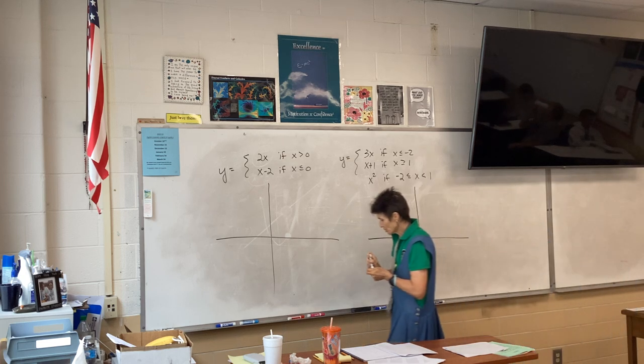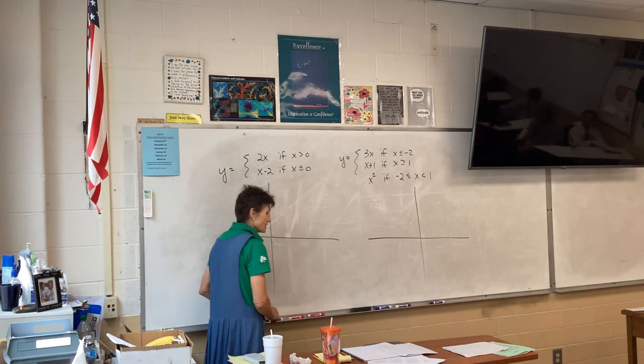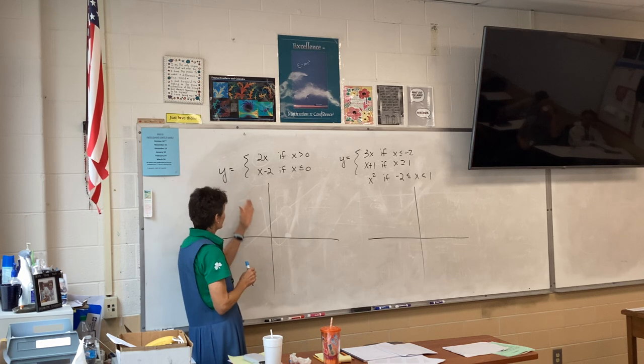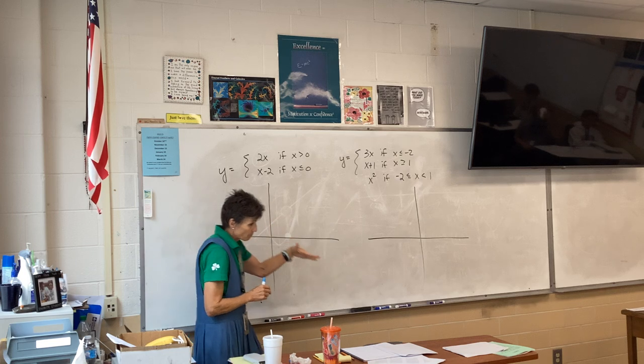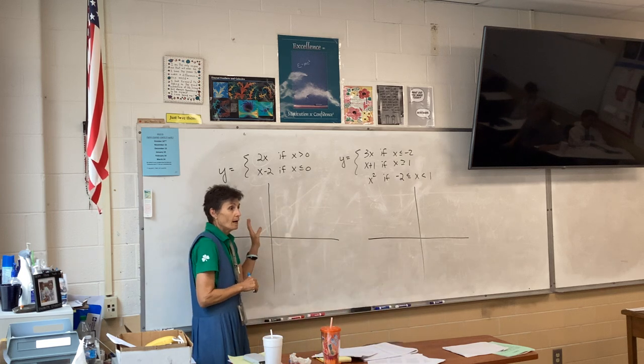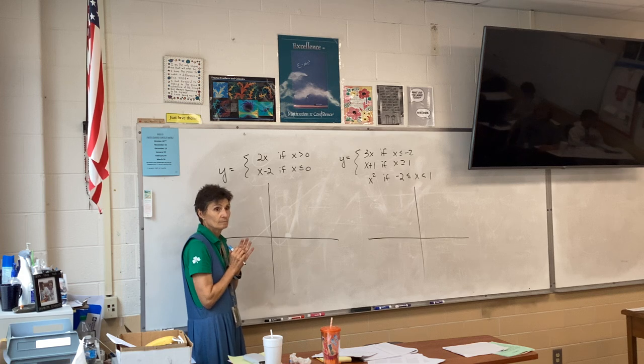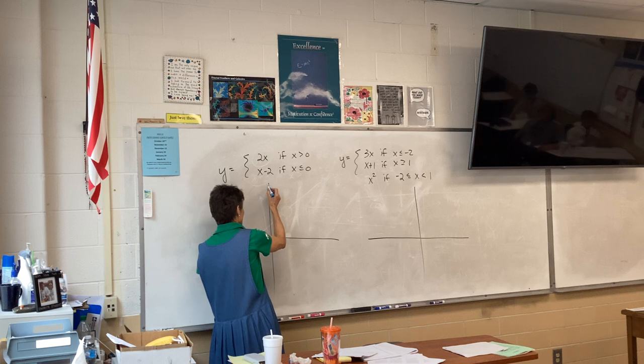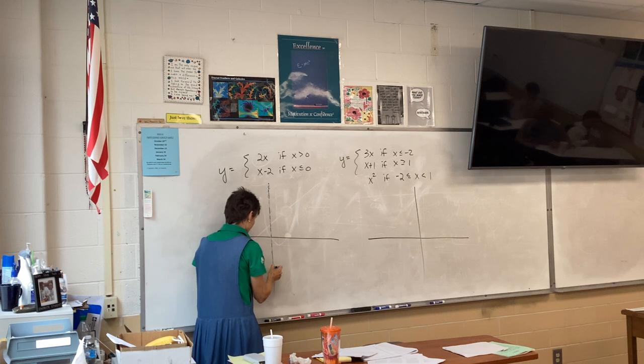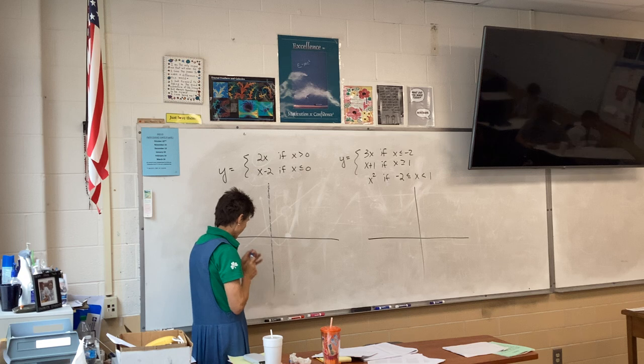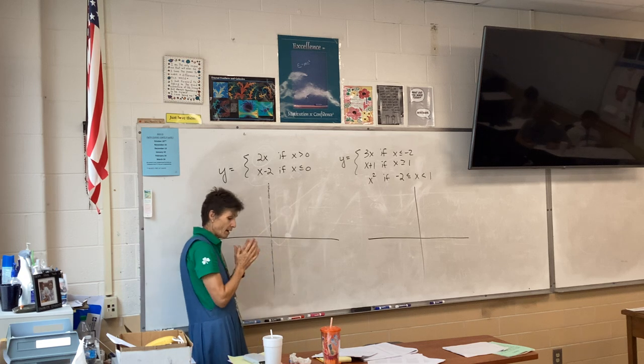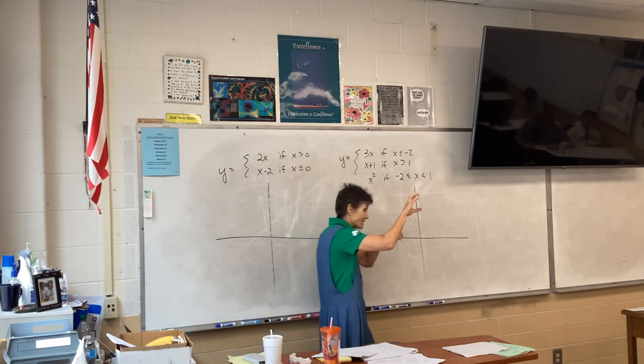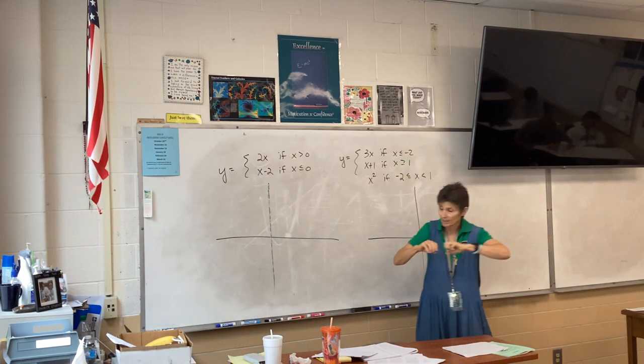Alright, so before lunch we were doing these guys and most of you had them pretty well figured out. So how do we start? Here's our problem. This is problem F. How do we start it? Is that a squiggly line? I'm going to put a squiggly line at zero so right here.